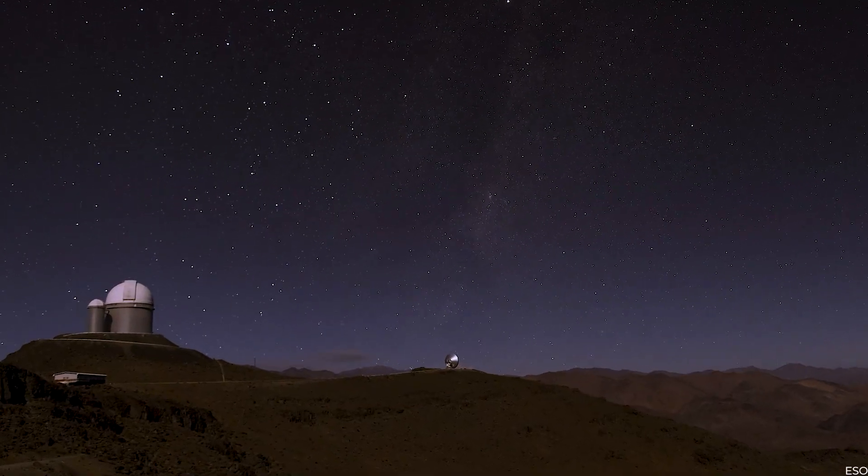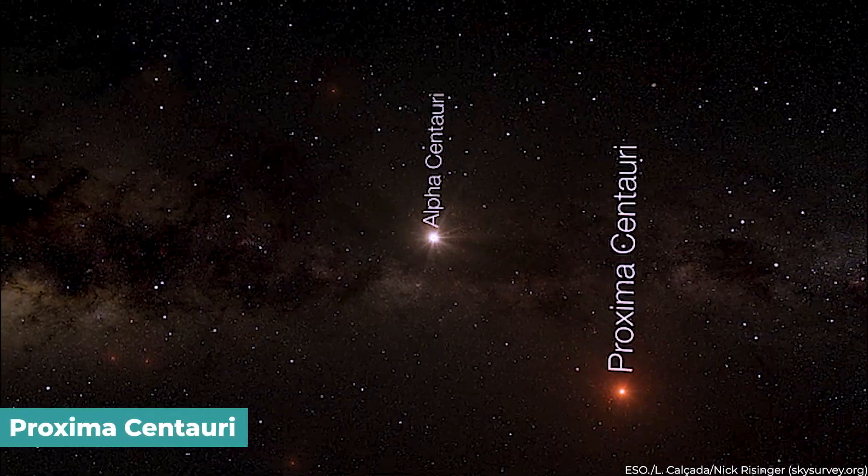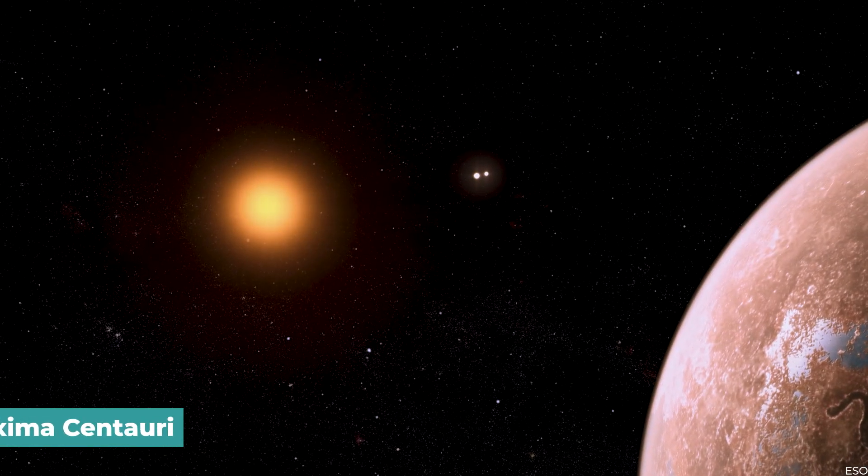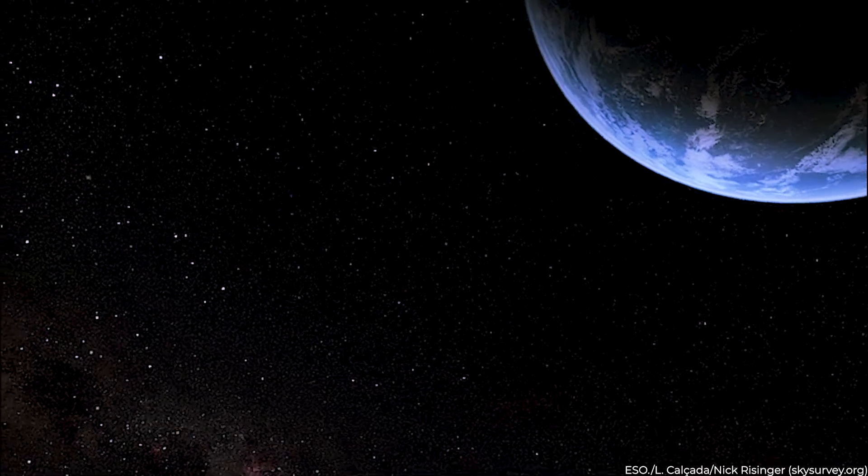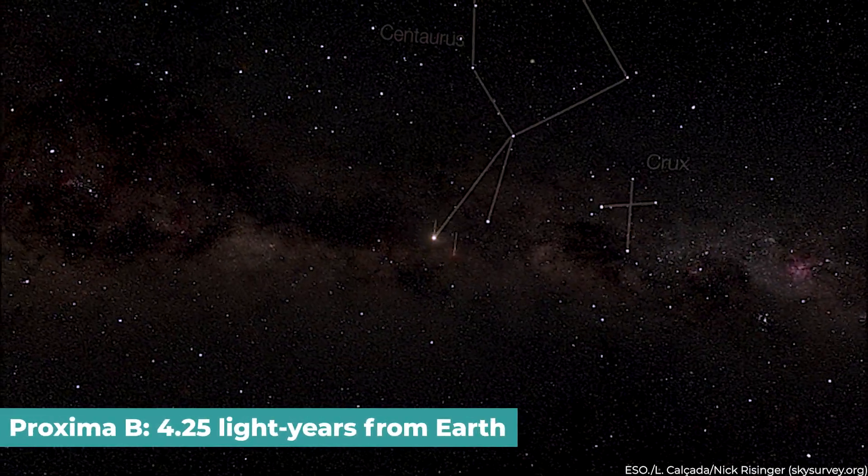Several years ago, researchers discovered an Earth-like planet circling a star named Proxima Centauri, close to our Sun. The unidentified planet, Proxima b, is just 4.25 light-years distant from Earth.